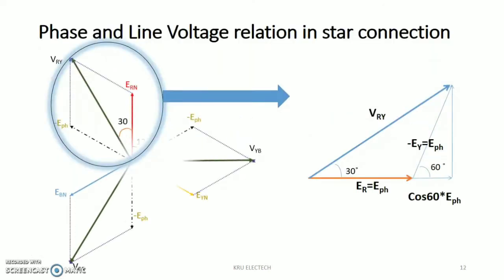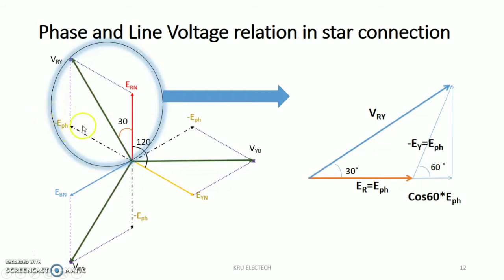Now let us see the circuit separately — how you can make the addition of these two vectors. Here is ERN and here is EYN. In the reverse direction, opposite side and equal magnitude, that is minus EYN, which is the phase voltage. Here is the E phase voltage, here is the same E phase, and here is the addition of the two, that is VRY. Here is ER equal to E phase and here is minus EY equal to E phase.